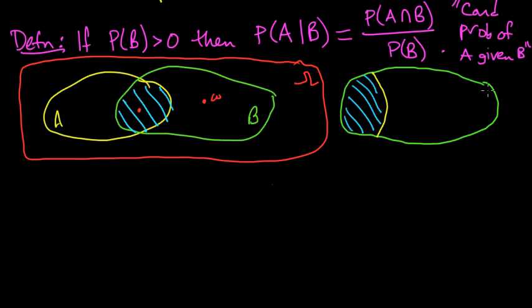So if I'm given that B occurred, what's the probability of A? You can think about B as defining a new probability measure space. Think of B as your new omega. And then it's just the probability of A in this new probability measure space. That's what this conditional probability means.